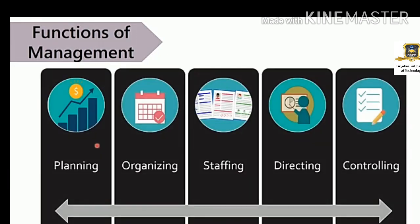The process of management is common to all types of business organizations, and these functions constitute the role of a manager. The process involves planning the company's future, thereafter organizing, which is followed by staffing, then directing them about how the work is to be done, and finally controlling the process.